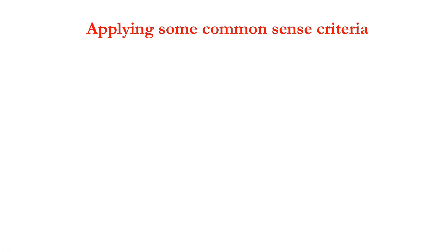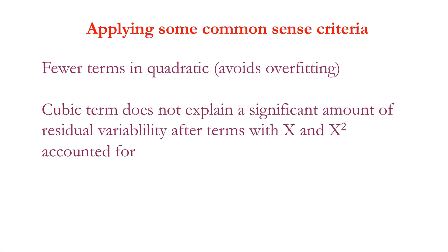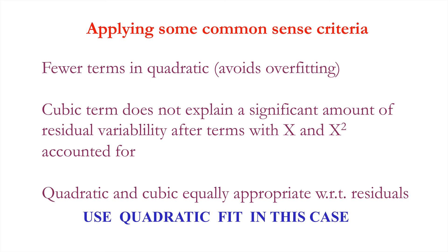So, let's apply some common sense criteria in selecting the most appropriate polynomial model in this case. There's fewer terms in the quadratic, so it avoids overfitting. The cubic term does not explain a significant amount of residual variability after the terms of x and x squared were accounted for. And the quadratic and cubic appear equally appropriate with respect to those residuals. So, everything points in this case to using the quadratic model as a predictor of the change in y with a change in x.